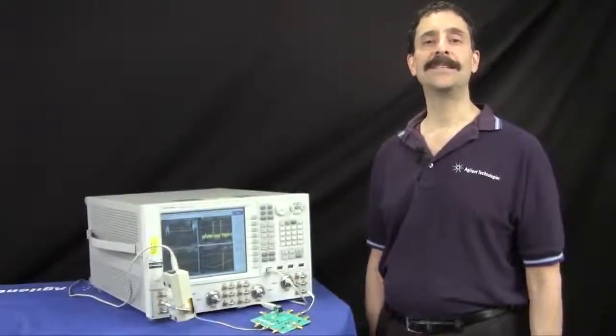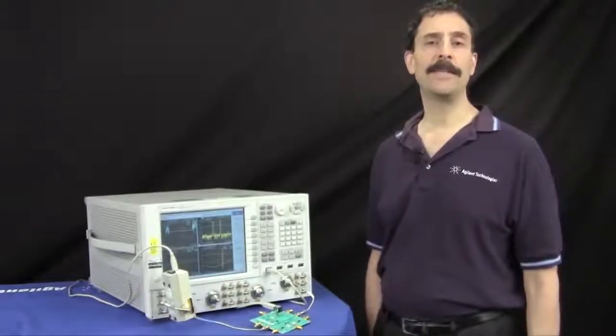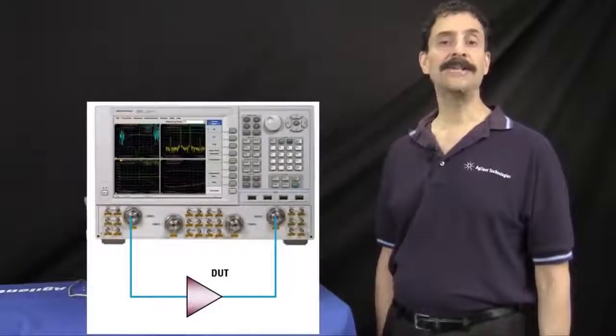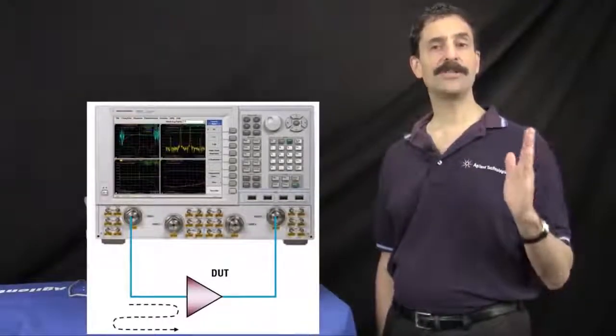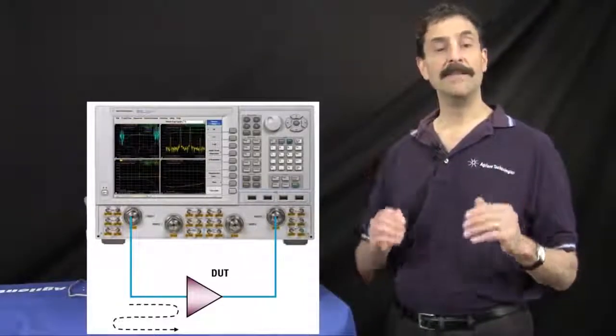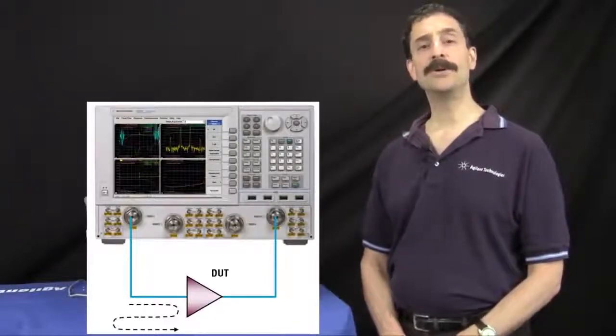Part of the PNA-X's high accuracy comes from using vector error-corrected S-parameters to measure the available gain of the DUT. This standard technique corrects for mismatch between the imperfect source match of the test system and the input impedance of the DUT. Mismatch correction is also applied when measuring the DUT's output noise power.